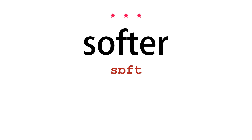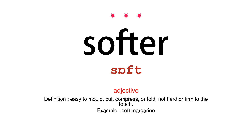Softer. Adjective. Definition: Easy to mold, cut, compress, or fold. Not hard or firm to the touch. Example: Soft margarine.